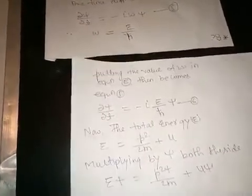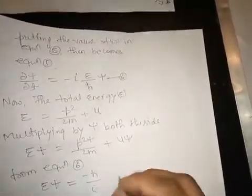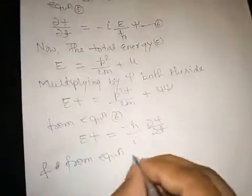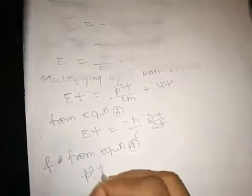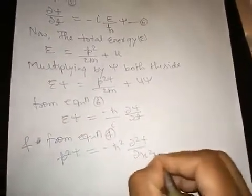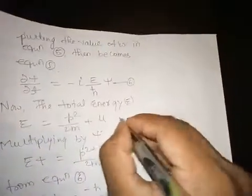Therefore from equation 6, Eψ equals minus (ℏ/i)(∂ψ/∂t). And from equation 4, p²ψ equals minus ℏ² (∂²ψ/∂x²). Let this be equation 7 and equation 8.